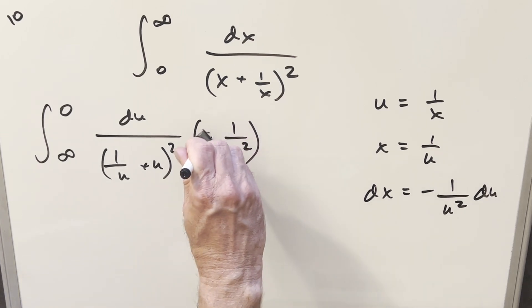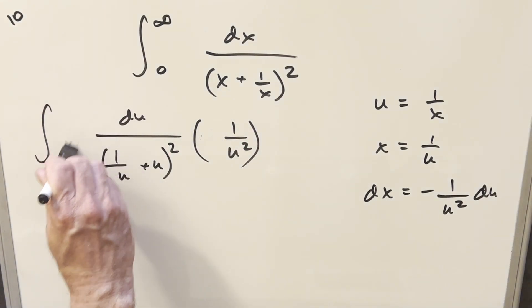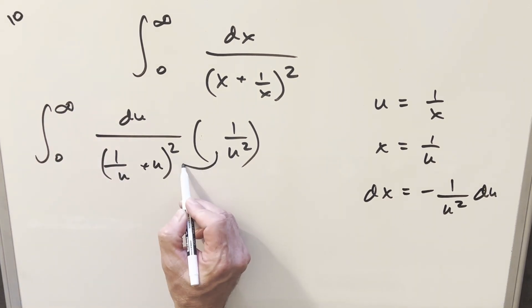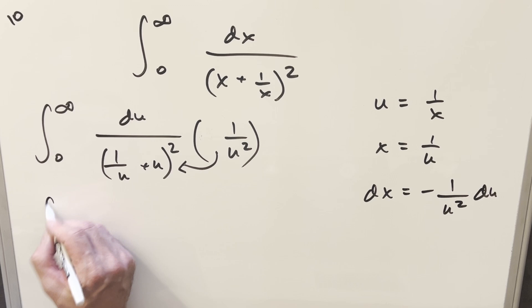Let's take this minus sign and use it to swap the bounds. So now we get our bounds back like this. And then I'm going to just distribute this u squared in here. But because this is already squared, we're just multiplying in u. So when I do this,